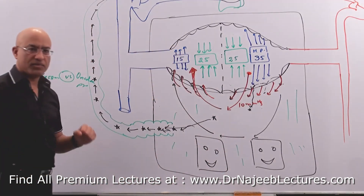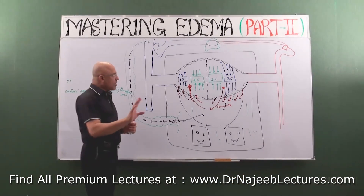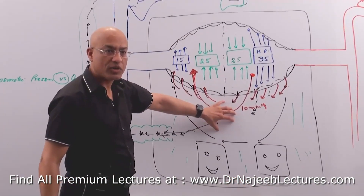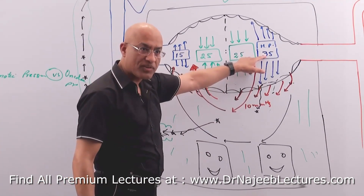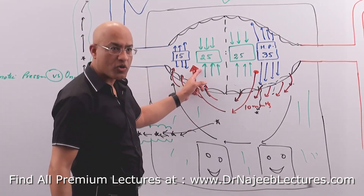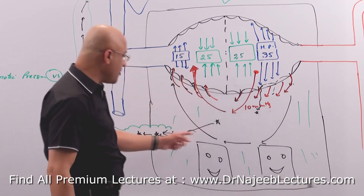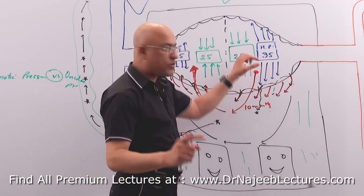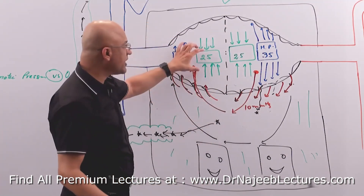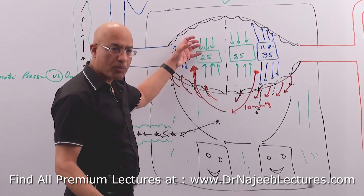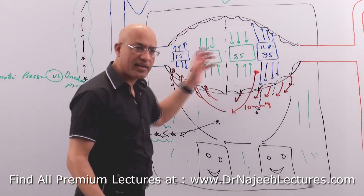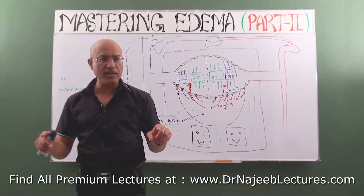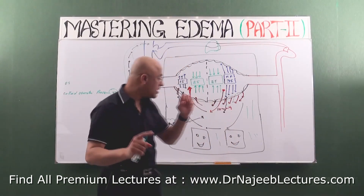So what are the factors which determine the amount of fluid in the interstitial area? Number one: hydrostatic pressure — it determines how much fluid goes out. Number two: osmotic or oncotic pressure — it determines how fluid is pulled back. Number three: lymphatic drainage. The arterial side of the circulation acts as a pusher, and the venous side acts as a reabsorbing or suction mechanism. In every tissue you have a pushing mechanism and a suction mechanism.